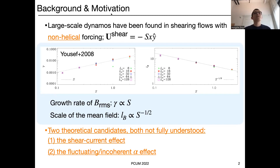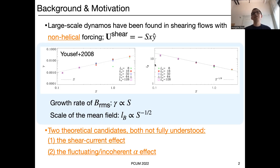This whole project is motivated by the shear dynamo problem. People have found large-scale dynamos in shear flows with non-helical turbulent forcing. For example, in a Physical Letters paper, they found that the growth rate of the B root-mean-square of the magnetic field scales linearly with the shear rate, and the scale of the mean field goes down with increasing shear rate. So far, there are mainly two theoretical candidates: the shear current effect and the fluctuating or incoherent alpha effect.